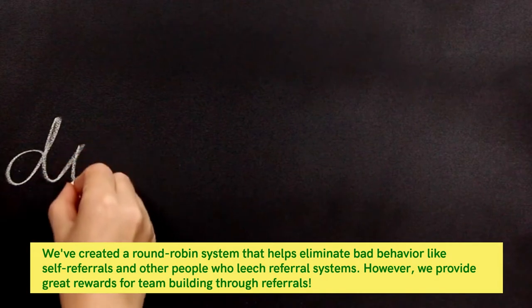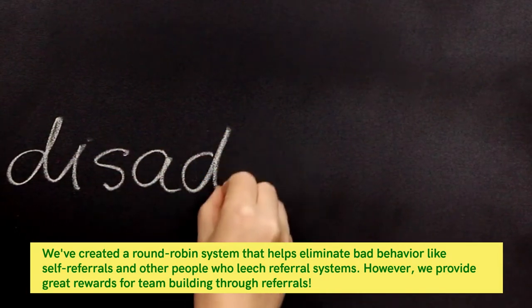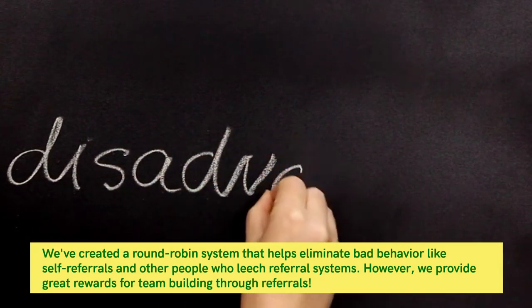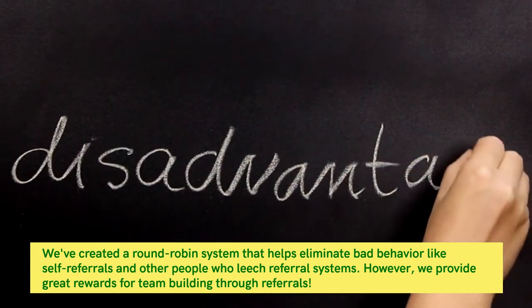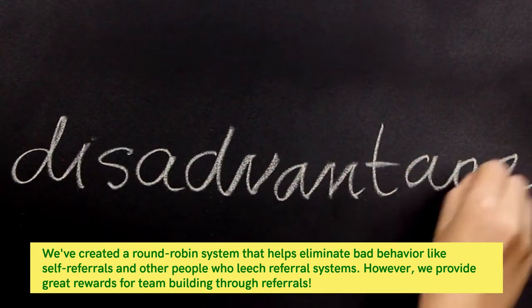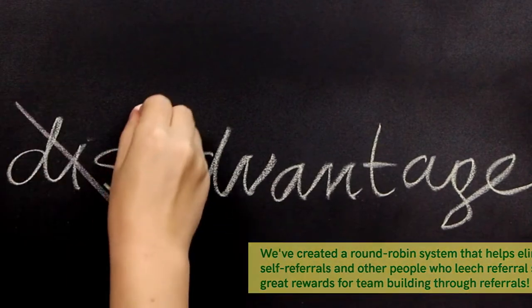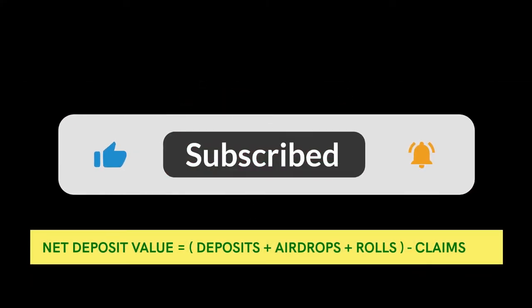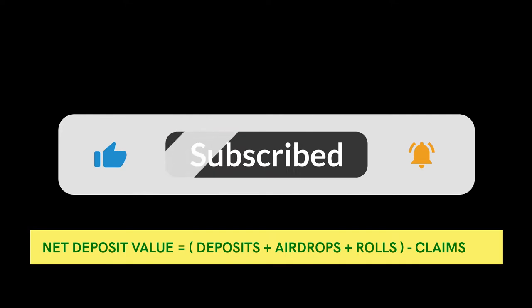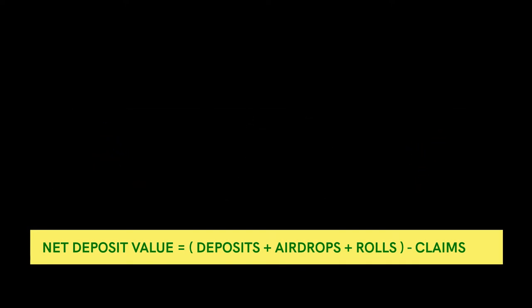A round-robin system has been created to help eliminate bad behavior like self-referrals and others who leach referral systems, while still providing great rewards for team building through referrals. Net deposit value equals deposits plus airdrops plus rolls, minus claims.